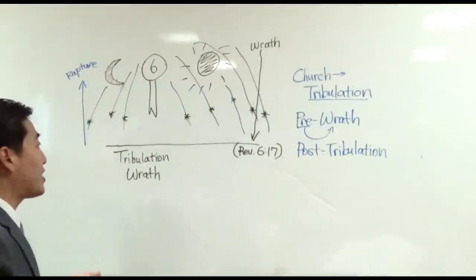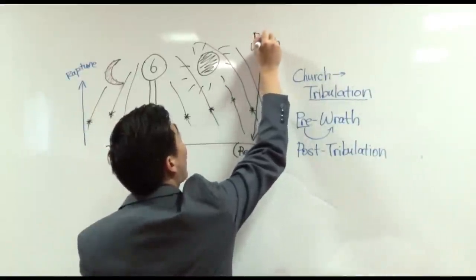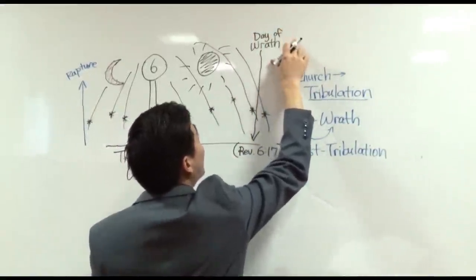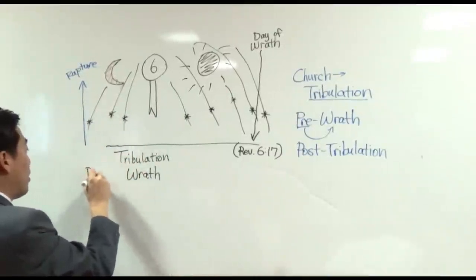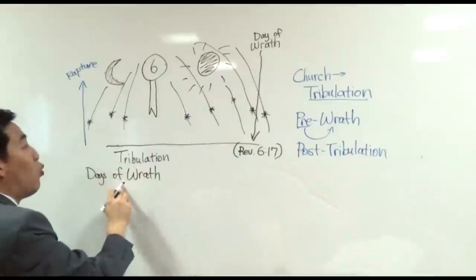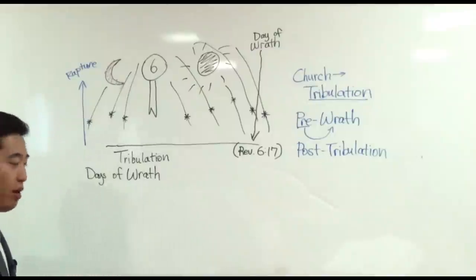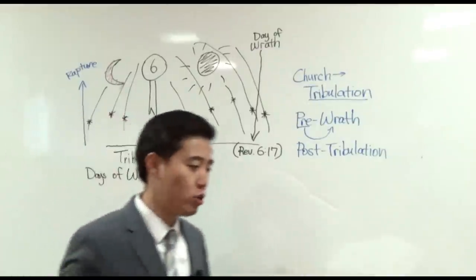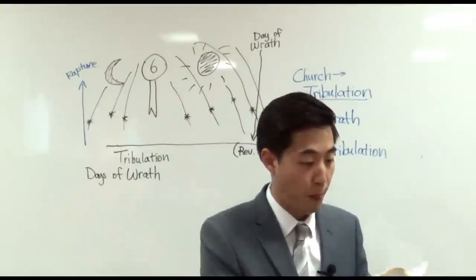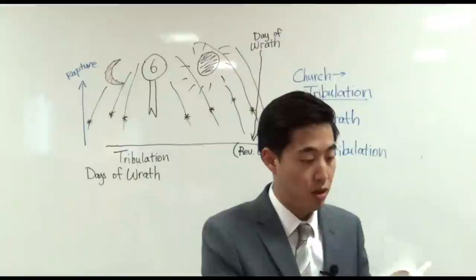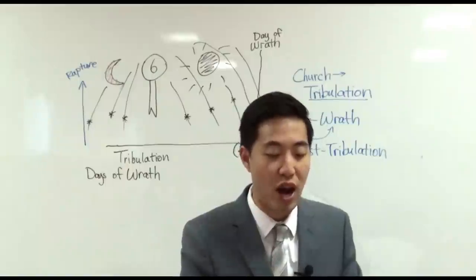It's until after the tribulation, then they can escape the wrath, before the wrath. So basically, post-tribbers believe that you're right that we're going to avoid the wrath, but it's not the tribulation. The wrath is after the tribulation, and their proof text is, notice, Revelation 6:17. However, they don't realize this. The simple answer is that yes, it's true that in this passage there is a day of wrath, but there is more than one day of wrath in the tribulation. There are days of wrath.